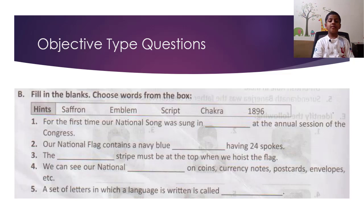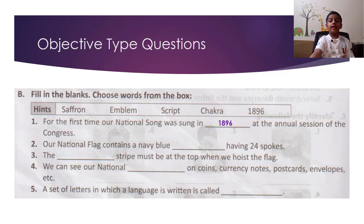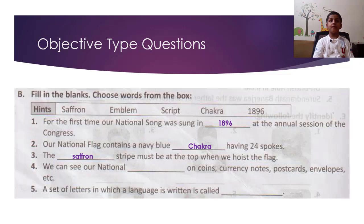Section B: Fill in the blanks. Question 1: For the first time, our national song was sung in 1896 at the annual session of the Congress. Question 2: Our national flag contains a navy blue chakra having 24 spokes. The saffron stripe must be at the top when we hoist the flag. We can see our national emblem on coins, currency notes, postcards, envelopes, etc. A set of letters in which a language is written is called a script.